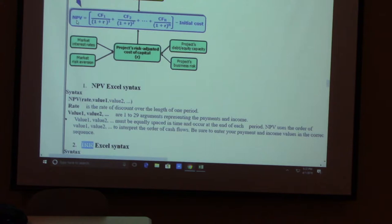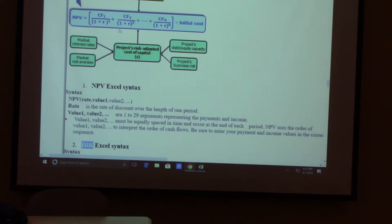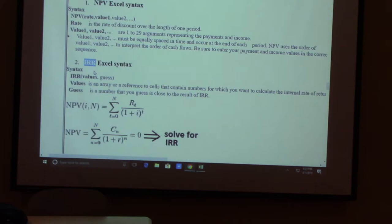The IRR is like a student loan break-even rate for attending JU. If your loan rate is lower than the IRR, you're better off; if it's higher, you'll be losing money. NPV tells you the dollar amount net worth or net loss. IRR tells you the highest borrowing cost you should accept — if your cost exceeds the IRR, the project isn't worth it.